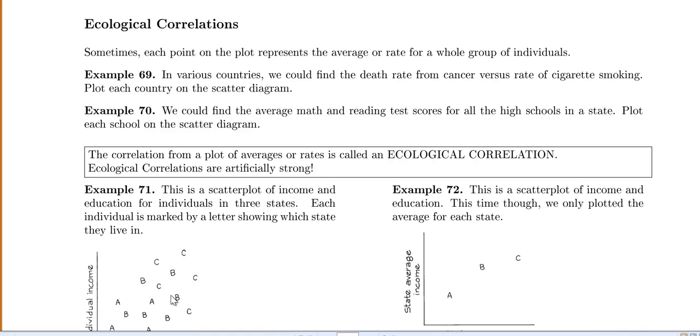But it doesn't work out very well. So the correlation from a plot of averages or rates is called an ecological correlation. And ecological correlations are artificially strong. So that means they're going to be a lot higher than they truly are.